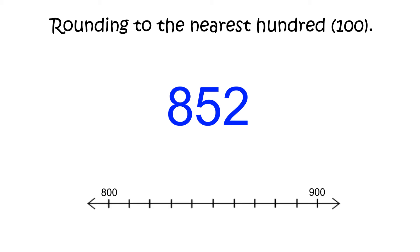852 comes between 800 and 900. In order to determine whether we round up or down, we would look at the digit to the right of the hundreds place.